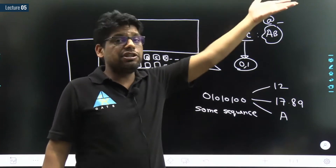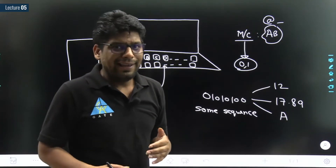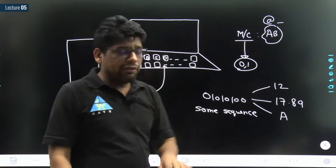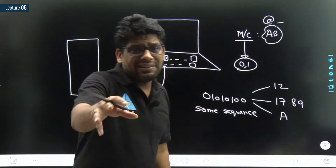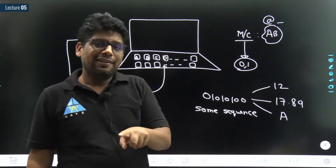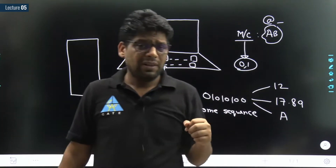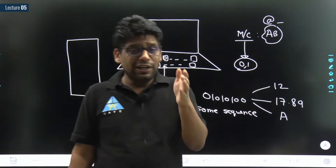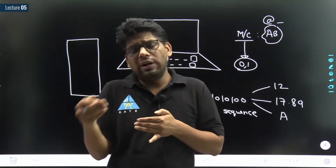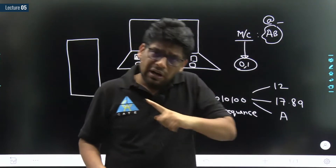Even if you provide an integer from the keyboard, for a machine it is nothing but a sequence of 0s and 1s. If you provide a floating value like 17.89, again for a machine it receives that as another sequence of 0s and 1s. Even if you press a symbol like capital 'A', '@', underscore, minus, or plus — for a machine everything is just some sequence of 0s and 1s. The machine needs to identify whether a particular sequence of 0s and 1s is to be treated as an integer, a decimal number, or a particular symbol.